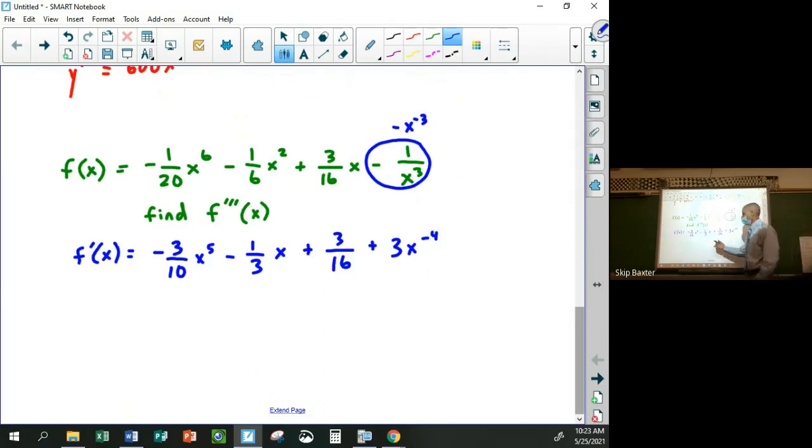And then you just keep going like the second derivative. This would be 15/10ths, which is 3 halves. Negative 3 halves x to the 4th minus 1/3rd.